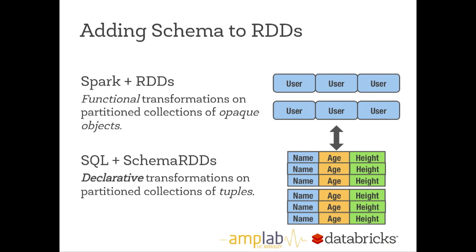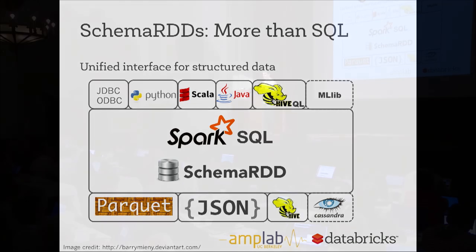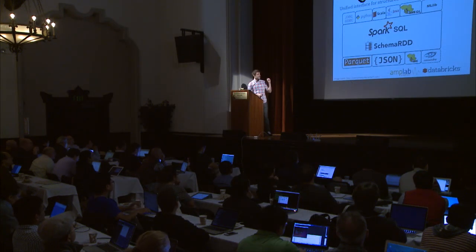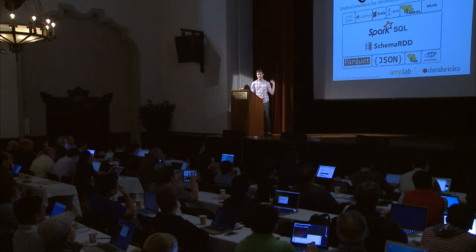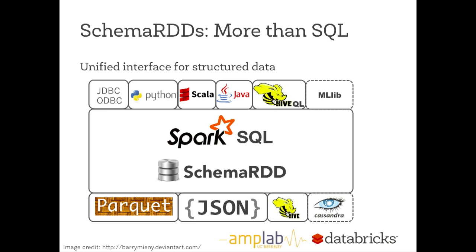We really try to blur the lines between functional and declarative transformations, so you can go back and forth between schema RDDs and RDDs easily. A schema RDD actually is an RDD — you can do anything on it you can do with normal RDDs, but you can also run SQL on them. Schema RDDs sit at the middle, with a variety of storage formats at the bottom: Parquet, JSON, Hive, and ongoing Cassandra work. You can access data through JDBC, ODBC, Python, Scala, Java, HiveQL, and there's even tighter integration with MLlib — so tables in Spark SQL can be automatically dumped into off-the-shelf machine learning algorithms.